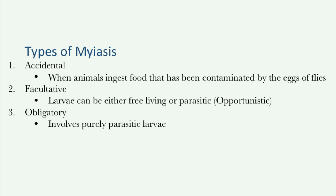Facultative myiasis involves larvae which can either be free-living or parasitic, and are typically seen as opportunistic. They can develop in both carrion or living tissue.